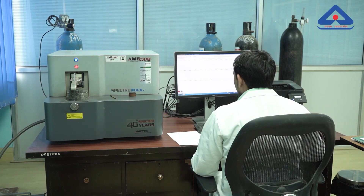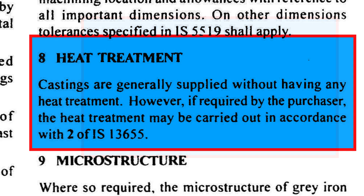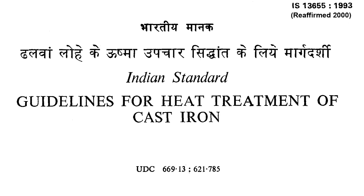Clause 7 of IS-210 talks about workmanship and finish of the casting. The quality of workmanship and finish is a cornerstone of the casting process, ensuring the product meets technical, functional and aesthetic requirements. Heat treatment is a critical and flexible process used to ensure the performance, durability and lifespan of castings, allowing manufacturers to meet specific design and functional requirements. According to Clause 8 of IS-210, castings are generally supplied without heat treatment; however, if heat treatment is necessary, it should be performed in accordance with IS-13655.